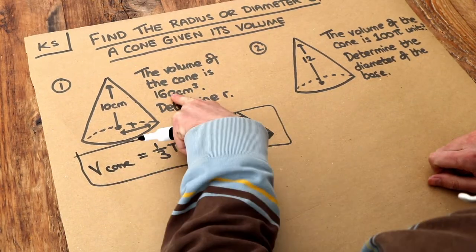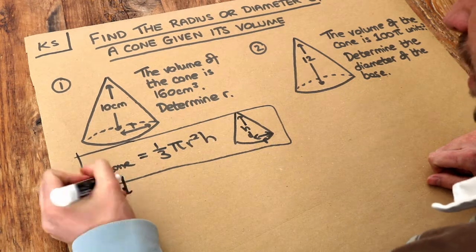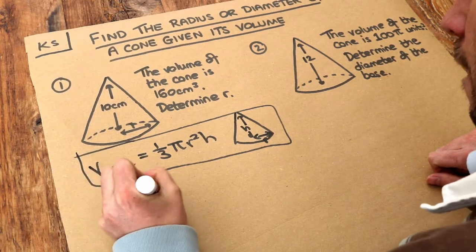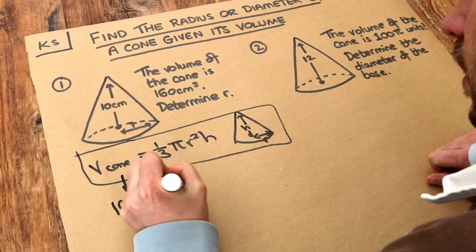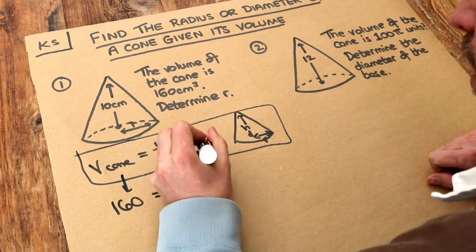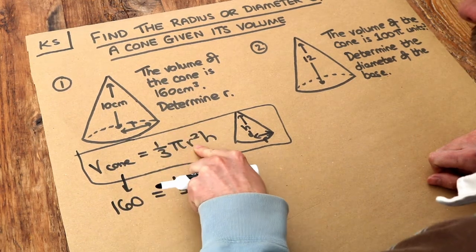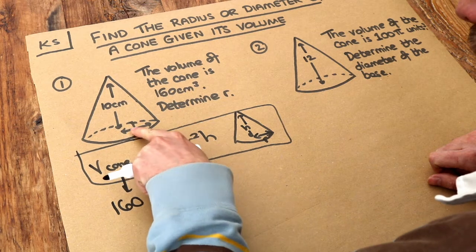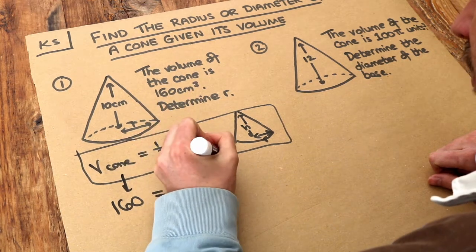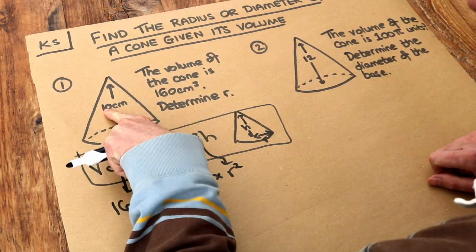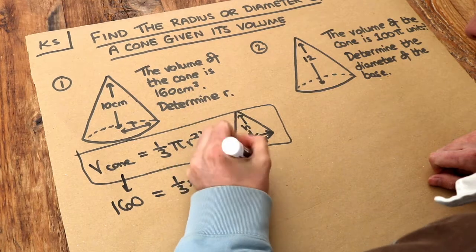This time we know what the volume is, it's 160, so let's substitute into there. We've got a third times pi multiplied by r squared. The r here is just r, we don't know what r is, and we do know the height is 10, so we're multiplying by 10.